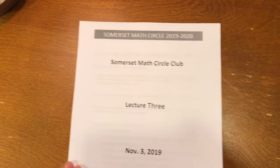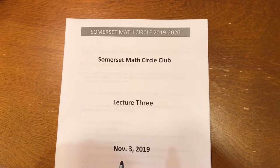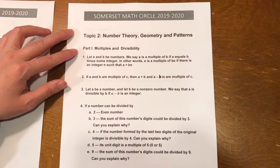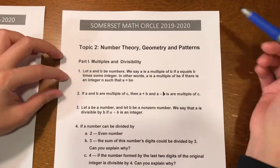Hello everyone, today is Somerset Math Circle Club lecture number 3. Today's lecture has 5 parts. We'll start with part 1, multiples and divisibility. We have covered this last year. Here we have a few properties to go through.